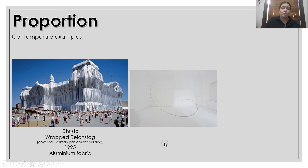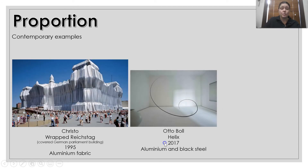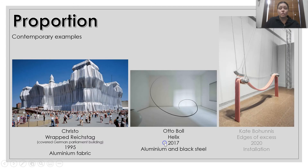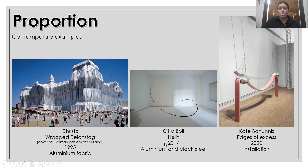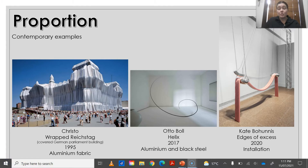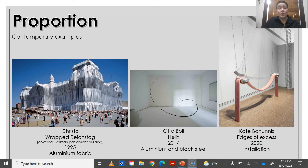Some contemporary examples of proportion: Christo, Boll, and Bohannes, who won the Ramsey Art Prize in 2021. They're all showing proportion in different ways, and you could also argue that they're showing scale.